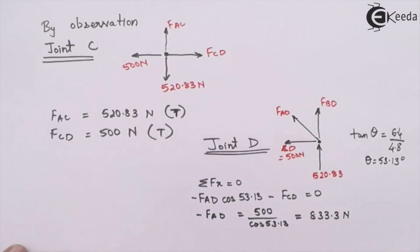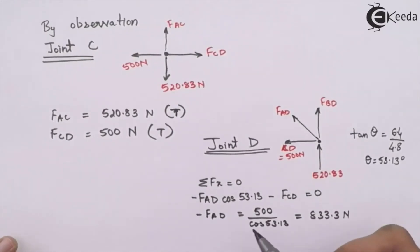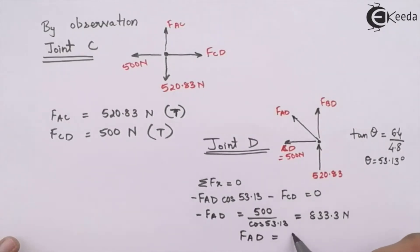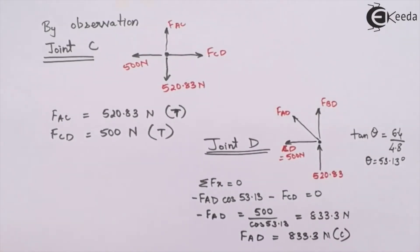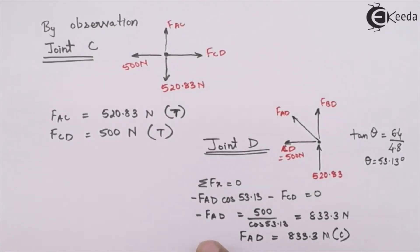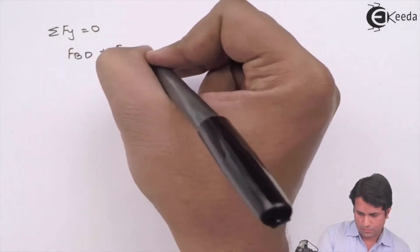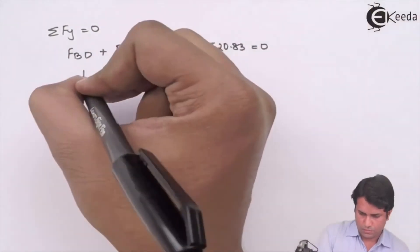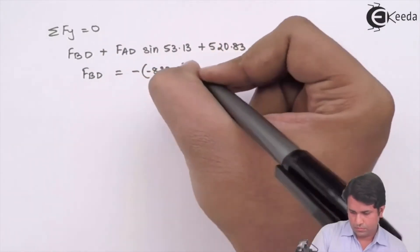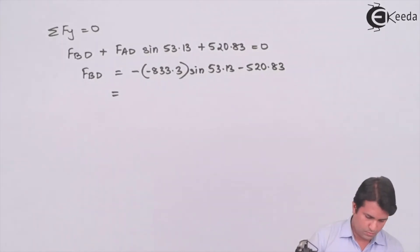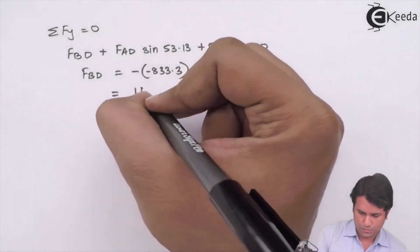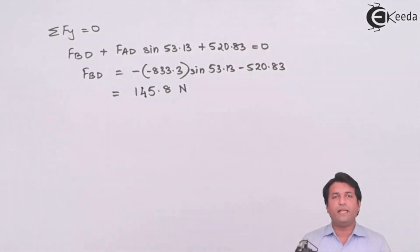Applying the conditions of equilibrium, the value for FAD comes out as negative, meaning the force in member AD is compressive. Applying equilibrium in the vertical direction, the force in member BD comes out as positive, so it is a tensile force.